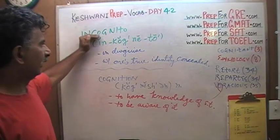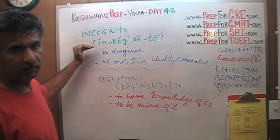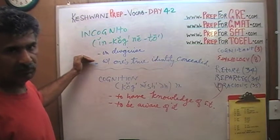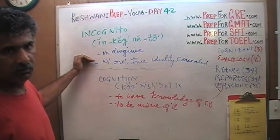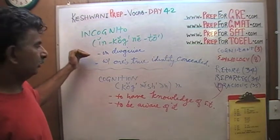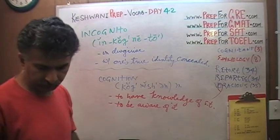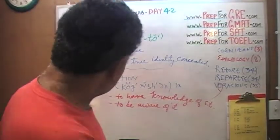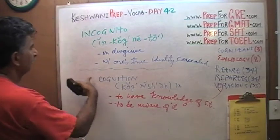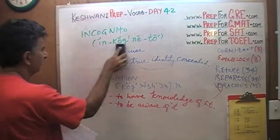From the word cognition — which means to be aware of something — we have the word incognito, meaning without knowledge. As in, I do not know who you are, I cannot tell, because you are concealing your identity. I have no knowledge as to your identity. You are incognito.